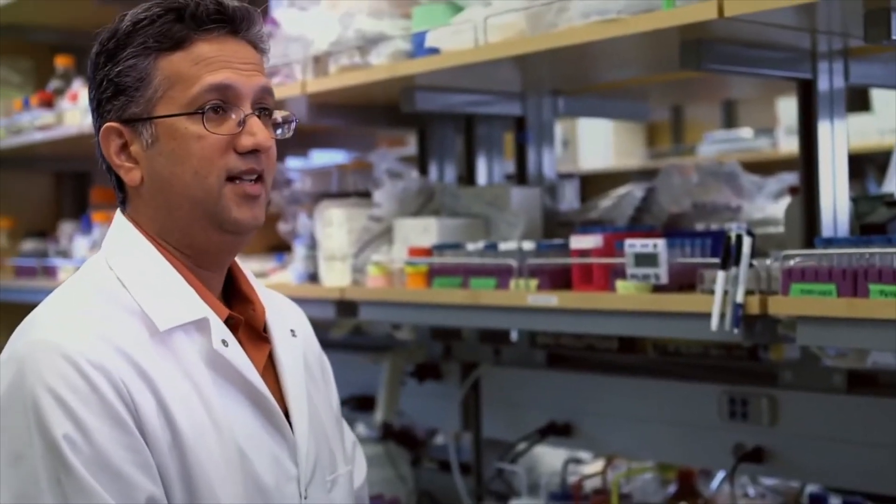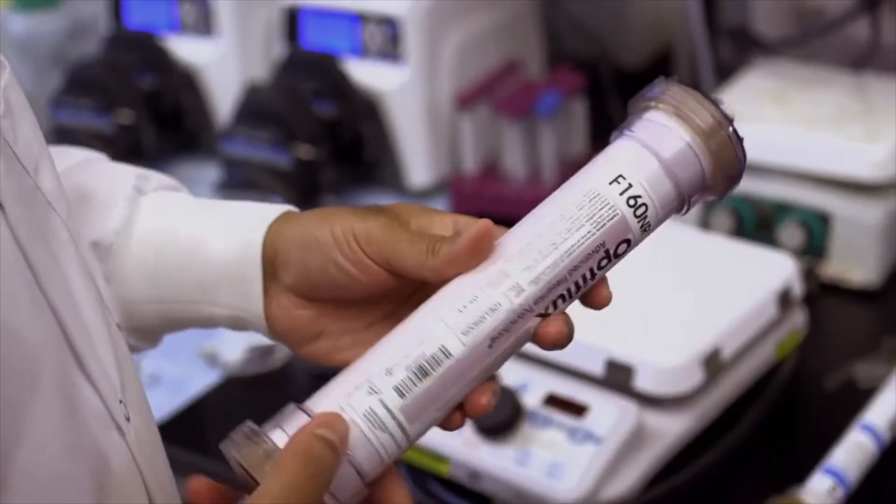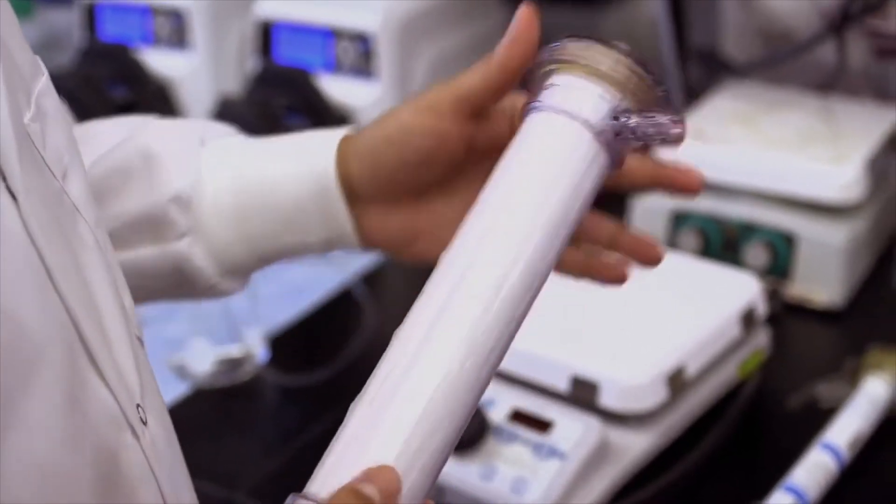A current dialysis machine is the size of a refrigerator, and the key component in that is a dialysis cartridge. There's about two square meters of surface area. To get the same amount of filtration, we need 1/20th in the silicon filter.